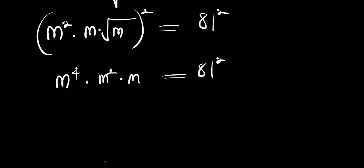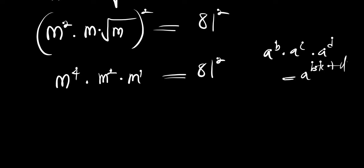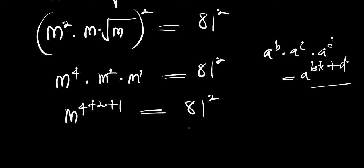What happens here — remember this m is m raised to the power 1. Using the identity: if you have a^b times a^c times a^d, this equals a^(b+c+d). Using this identity we are going to have m to the power 4 plus 2 plus 1, equals 81 to the power 2.